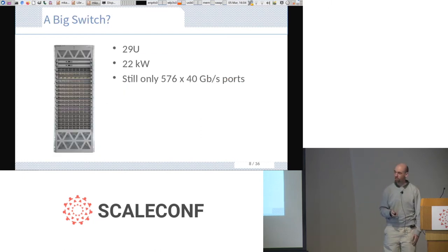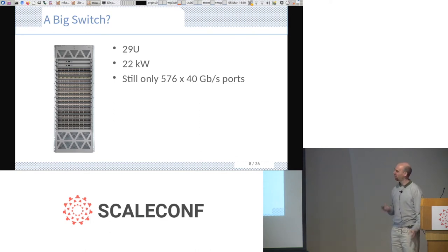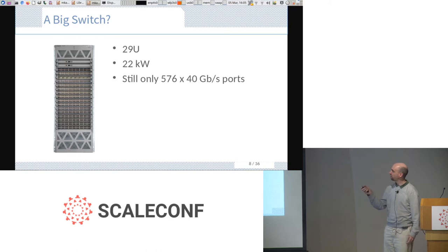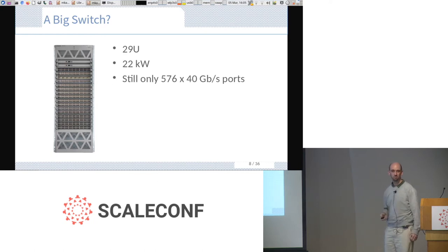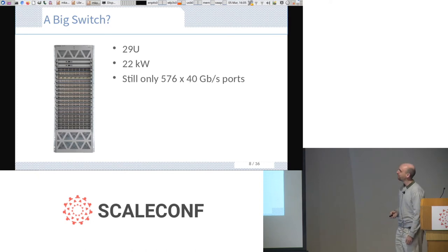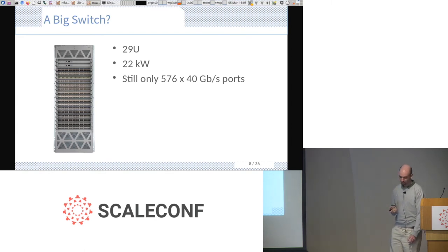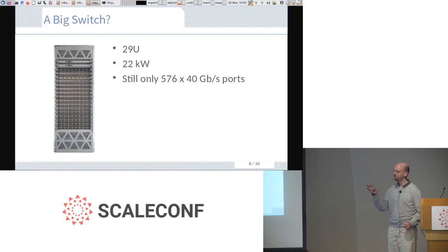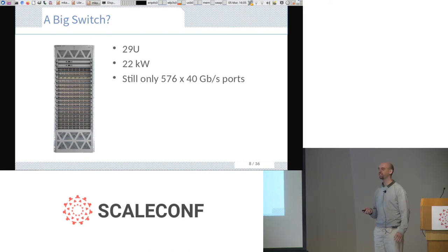Could we just buy a very big switch? That's an Arista switch there — Cisco will sell you something similar. It's 29 rack units and full rack width. It draws 22 kilowatts, which won't fly since our budget per rack is about 10 kilowatts. It still doesn't reach our 648 ports. And imagine running 576 cables into one rack — it would be a complete utter disaster.